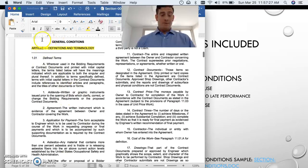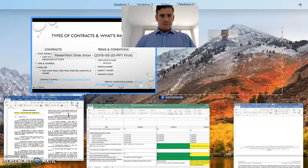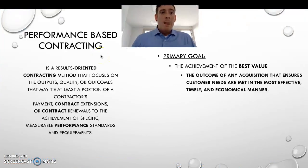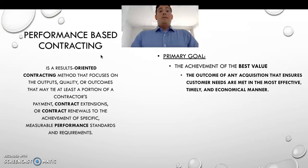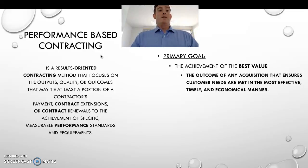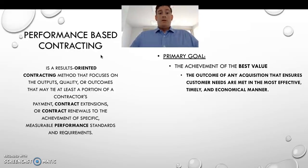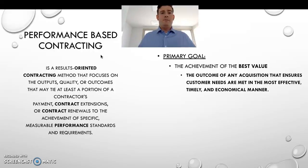Terms are again very important - what does it mean when you say contract price, agreement, application for payment - everyone has to understand these terms. Now, performance-based contracting: it's a results-oriented contracting method that focuses on the outputs, quality, or outcomes that may tie at least a portion of the contractor's payment, contract extensions, or renewals to the achievement of specific measurable standards and requirements.